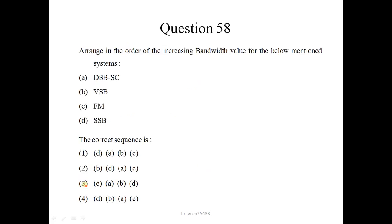Next question number 58. Arrange in the order of increasing bandwidth value for the below mentioned systems. DSB-SC is double sideband suppressed carrier. VSB is vestigial sideband. FM is frequency modulated. And SSB is single sideband. Most bandwidth efficient is SSB, so D will come at first. Then VSB has significant DC component and only single sideband. And then double sideband but suppressed carrier. All these 3 are AM. And next, last is FM.